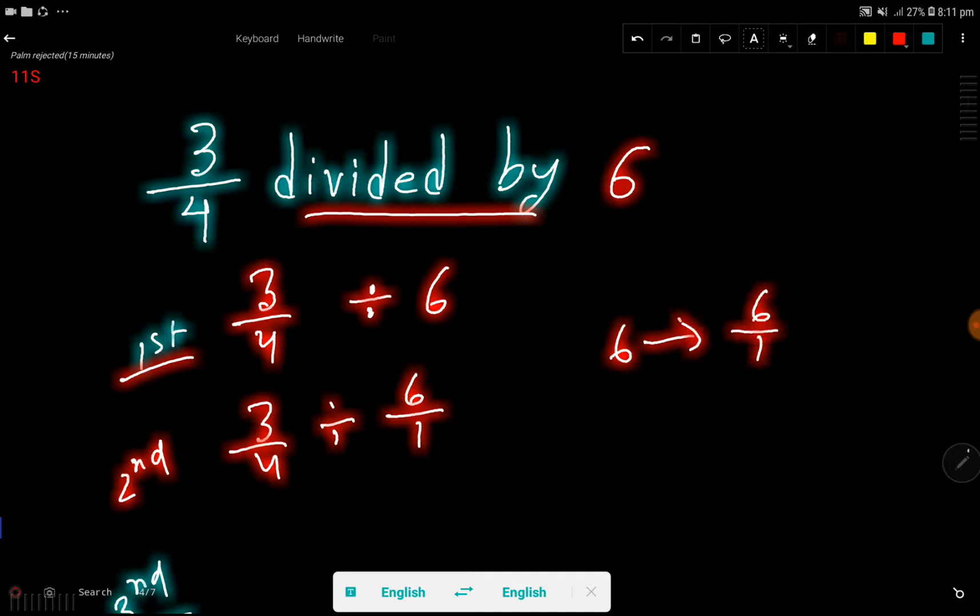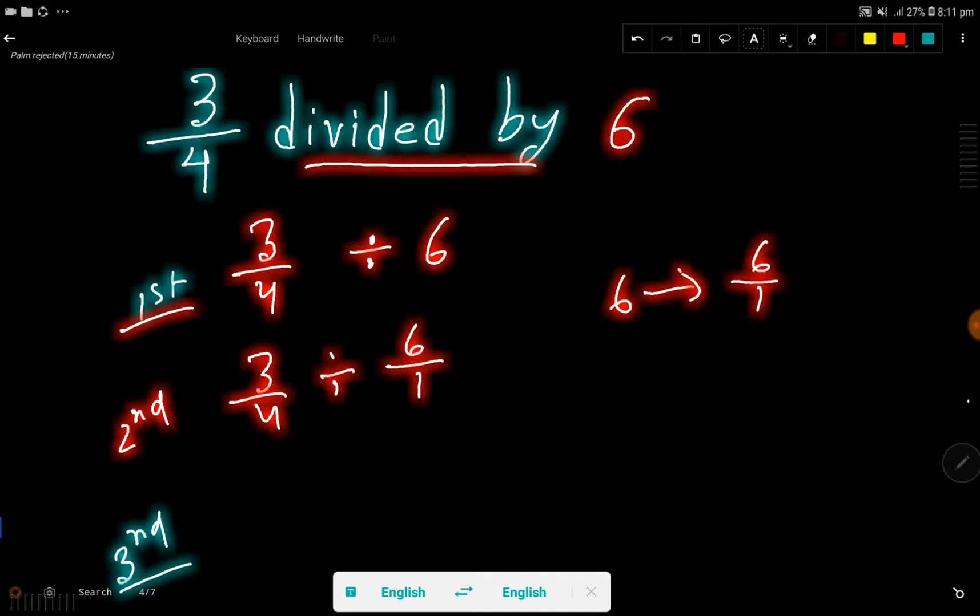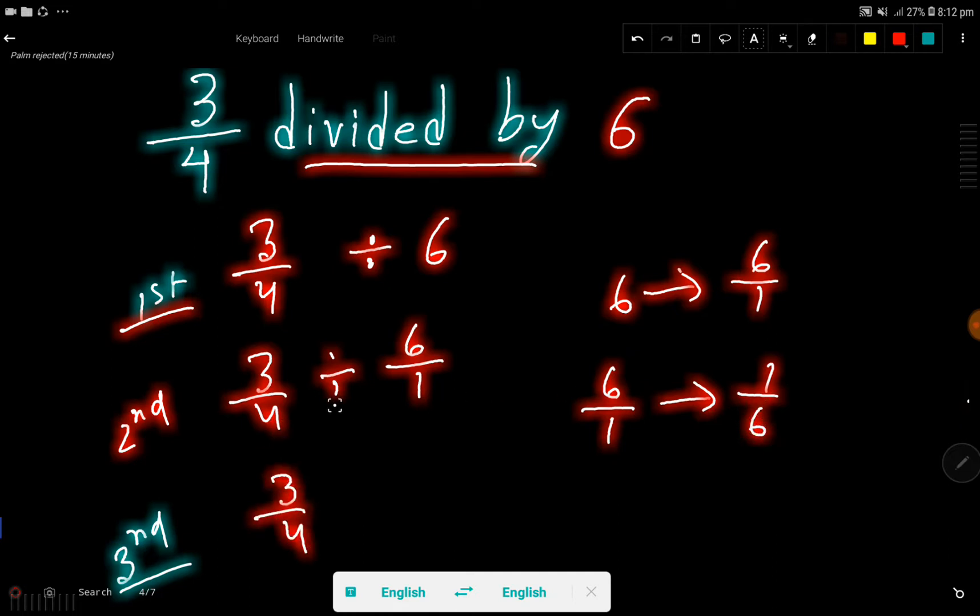Okay, then we have to take the reciprocal of 6 over 1. The reciprocal fraction of 6 over 1 is 1 by 6. So what do you mean by division? Division means multiplied by the reciprocal of this fraction.